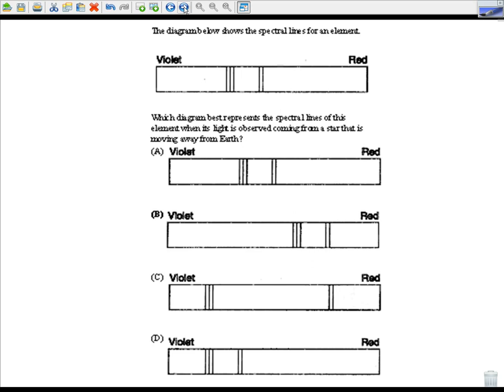Which diagram best represents the spectral lines of this element when its light is observed coming from a star that is moving away from Earth? We know that would be a redshift, so the spectral lines would be shifted towards the red end of the spectrum.